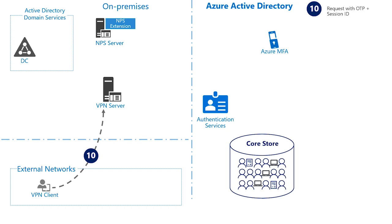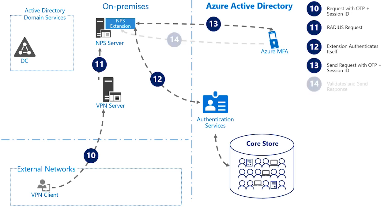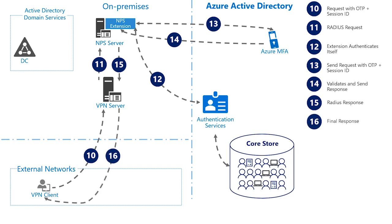The user gets the TOTP verification code from the Microsoft Authenticator application and enters it into the VPN client. The VPN client responds to the VPN server with the entered TOTP code and the session ID as a Radius request to the NPS server. The NPS extension authenticates itself and validates the TOTP and session ID with the Azure MFA service, and returns the Radius response back to the VPN server as either an accept or reject. The VPN server receives the response and provides it back to the VPN client — if successful, the VPN connection can be established.